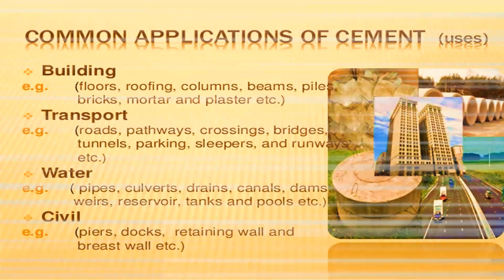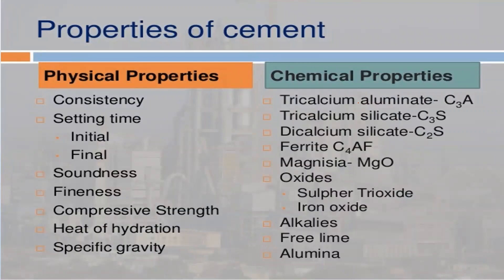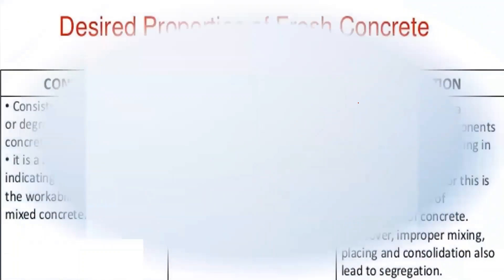Properties of cement include physical and chemical properties. Physical properties include: consistency, setting time (initial and final), soundness, fineness, compressive strength, heat of hydration, and specific gravity. Chemical properties include: tricalcium aluminate (C3A), tricalcium silicate (C3S), tetracalcium aluminoferrite (C4AF), magnesia (MgO), sulfur trioxide, iron oxide, alkalis, free lime, and alumina. We will test these physical properties in the Strength of Materials laboratory.